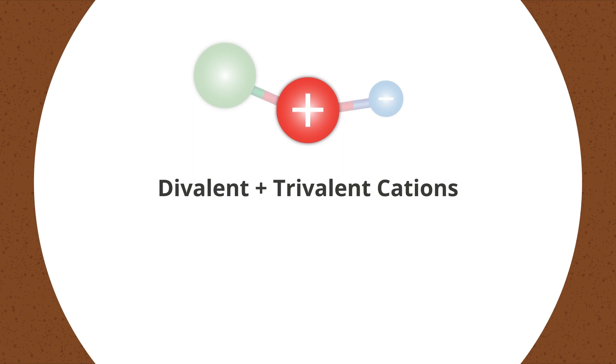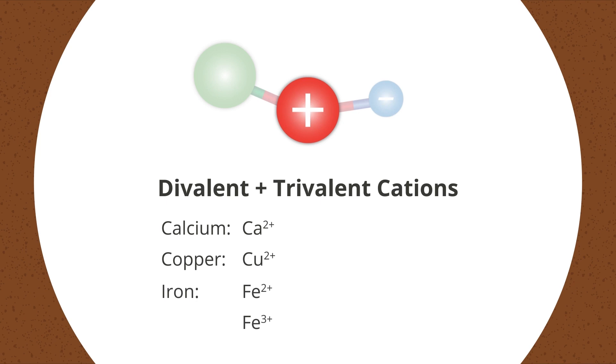The above nutrients have either two or three positive charges. They will bond both with armament and negatively charged nutrients in the soil.